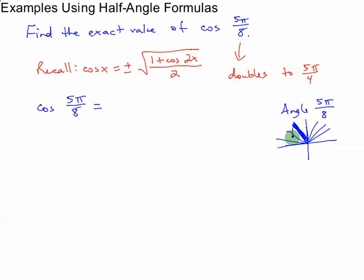So our reference triangle is going to be in the second quadrant for this angle. So cosine is negative. The horizontal side here is negative. So cosine of 5π over 8 is going to be the negative square root of 1 plus the cosine of 2 times the angle on the left side.